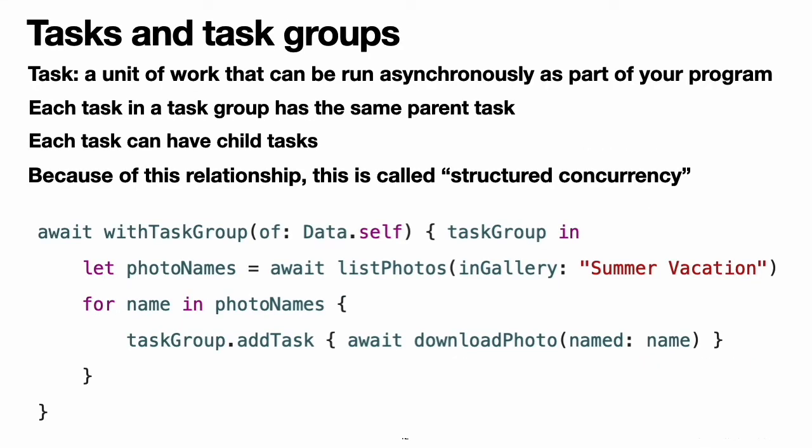Tasks and task groups. A task is a unit of work that can be run asynchronously as part of your program. All asynchronous code runs as part of some task. The async let syntax described in the previous section creates a child task for you. You can also create a task group and add child tasks to that group, which gives you more control over priority and cancellation and lets you create a dynamic number of tasks. Tasks are arranged in a hierarchy. Each task in a task group has the same parent task, and each task can have child tasks. Because of this explicit relationship between tasks and task groups, this approach is called structured concurrency. The explicit parent-child relationships between tasks lets Swift handle some behaviors like propagating cancellation for you and lets Swift detect some errors at compile time.